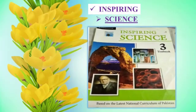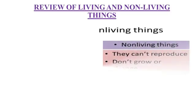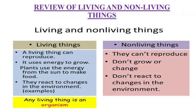This is your Inspiring Science textbook. Review of living and non-living things: living things can reproduce, use energy to grow. Plants use energy from the sun to make food. They react to changes in the environment. Any living thing is an organism. Non-living things cannot reproduce, don't grow or change, but can react to changes in the environment.